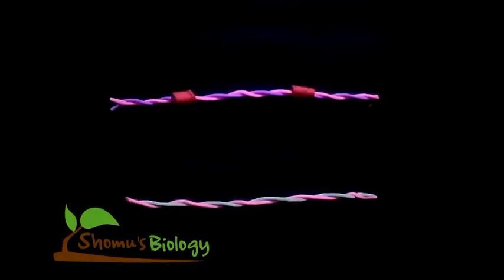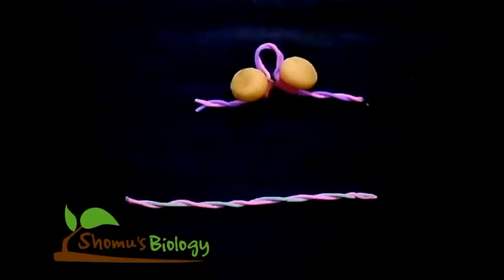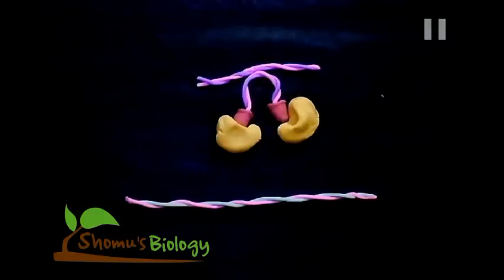The process works like this: the transposase enzyme, depicted here with these yellow colored molecules, will bind with the IR region. It will bring those IR regions close to each other and then finally create a cut. Then they hold on to that IR intermediate region.